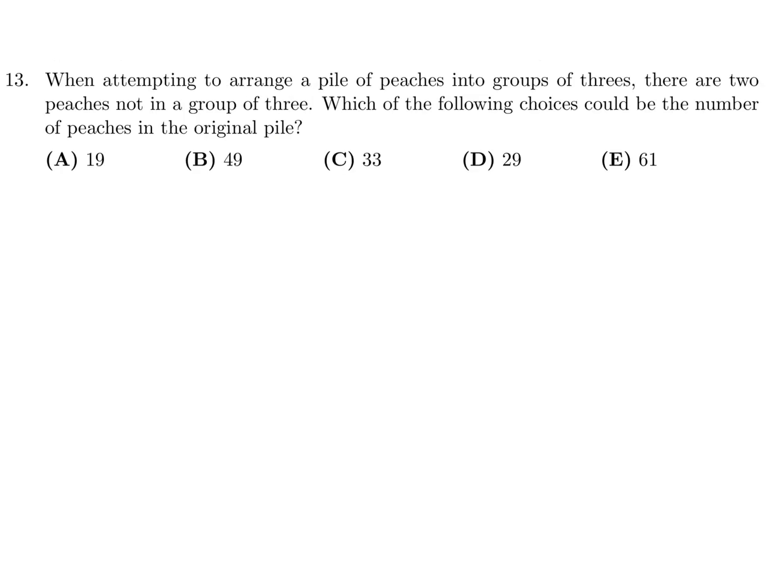When attempting to arrange a pile of peaches into groups of threes, there are two peaches not in a group of three. Which of the following could be the number of peaches in the original pile? Basically, you have a multiple of three with two peaches left over.